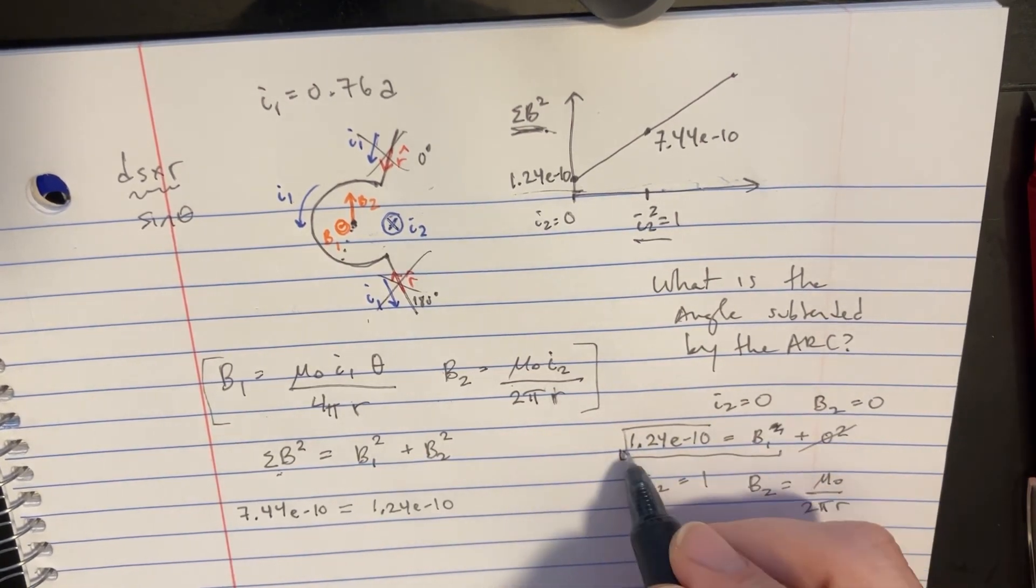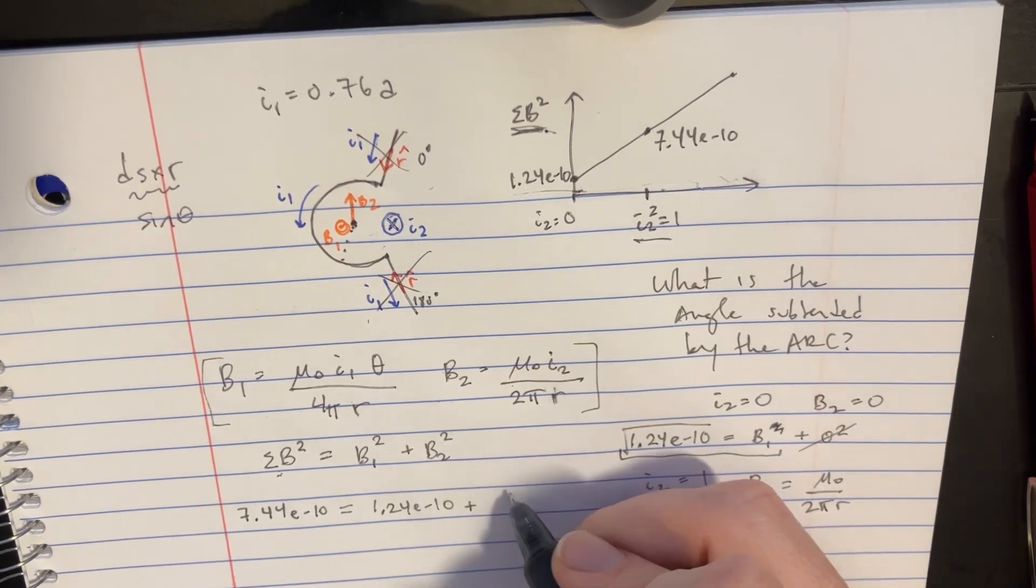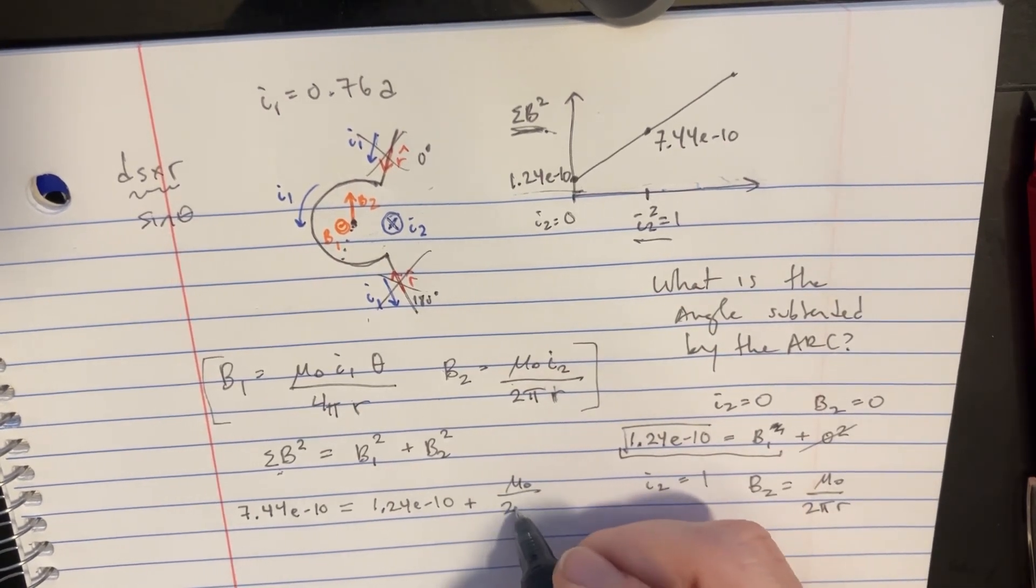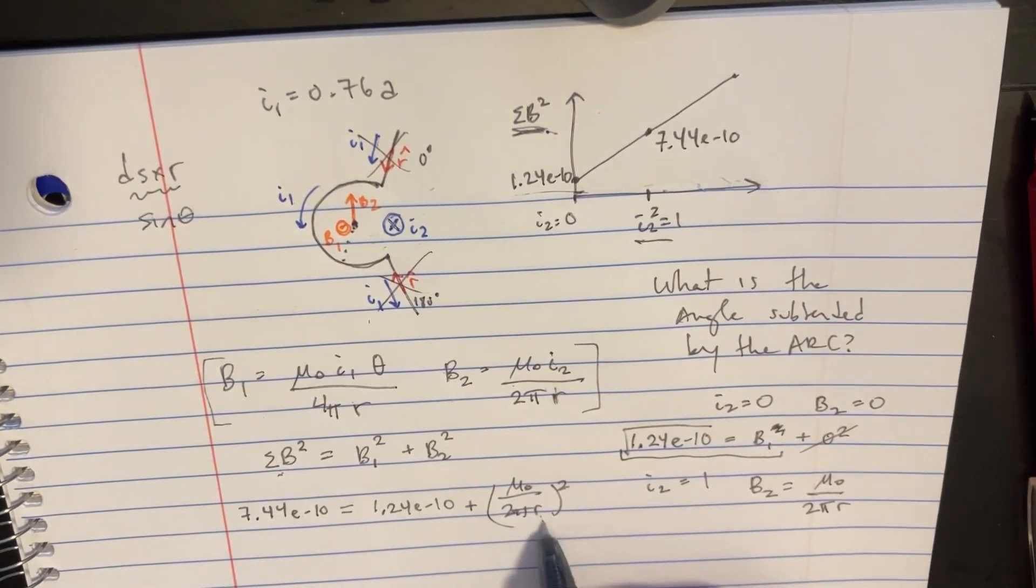And then plus the B2 squared, which would be mu naught over 2 pi r squared. Now we can actually solve for this r.